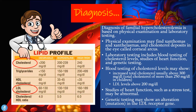Blood testing may show increased total cholesterol levels usually above 300 milligrams per deciliter, and total cholesterol of more than 250 milligrams per deciliter in children. LDL levels are usually found above 200 milligrams per deciliter. The lipid profile table shows that cholesterol levels less than 200 mg/dL are normal, 200 to 239 mg/dL is borderline, and anything greater than 240 mg/dL is high risk for lipid disease.